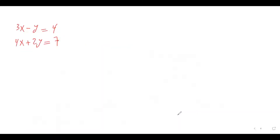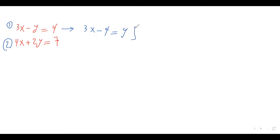Let's do another example with a new linear system. The first step is to isolate a variable from one of the equations. I'll choose equation one and isolate y. Move y to the right side and the constant term to the left: 3x minus 4 equals y, so y equals 3x minus 4. That's our expression for y.